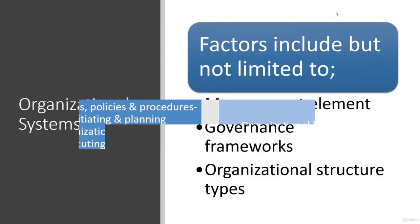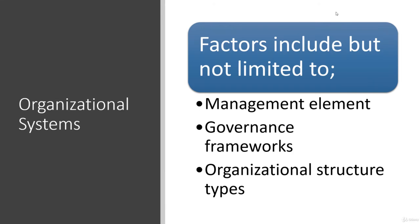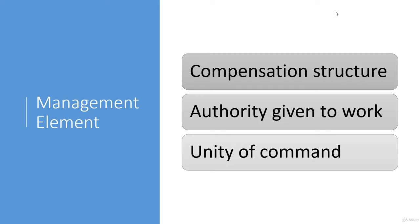These are organizational systems. Examples include management elements, governance framework, and organizational structure types. Any change to them will influence the way we operate and manage our projects. These things are very important: unity of command, authority given to work, compensation structure. For example, if you are executing an important project and the company announces appraisals and many employees are unhappy, that is going to impact their performance and your deadline.